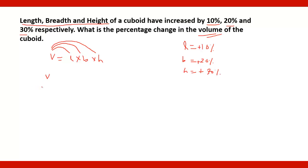We will assume that let the volume be 100 cubic units. Always take 100 because it is easier to calculate percentages. First, 10% increase: 10% of 100 is 10 cubic units, so new volume is 110. Now breadth is increased by 20%: 20% of 110 is 22, so it will be 132.